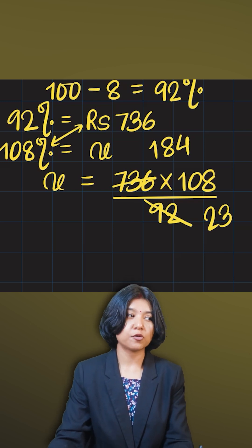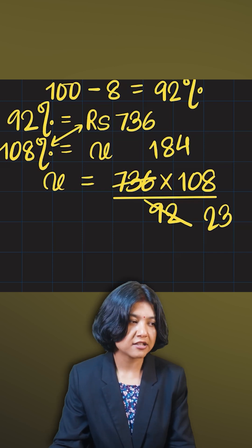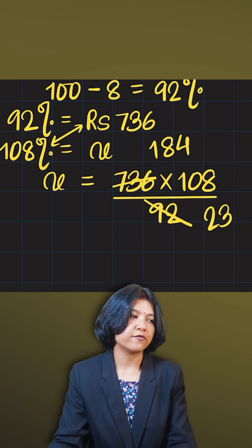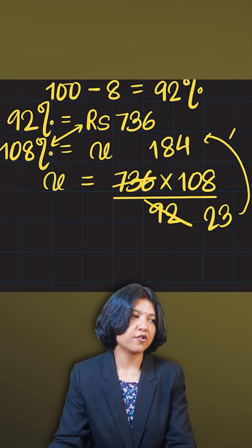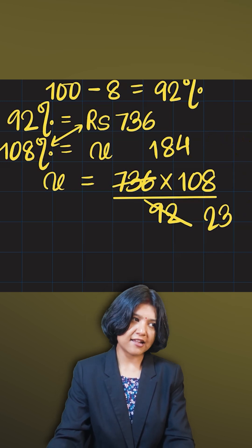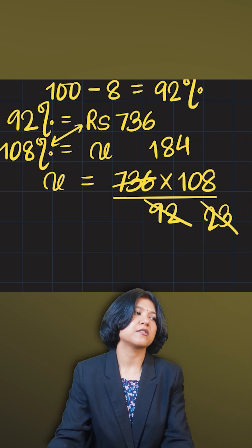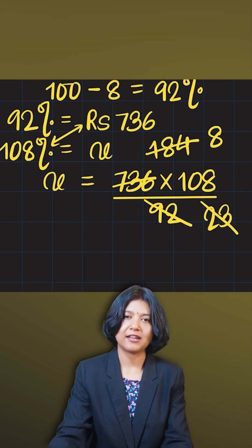23 should divide 184 because it does not divide 108. 23 times how much is 184? I know 3 into 8 is 24, so I'm going to quickly verify with that. And I see that yes, it is divisible. 23 times 8 is 184.